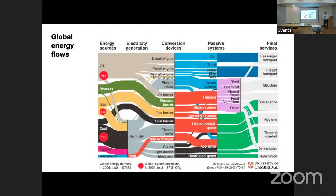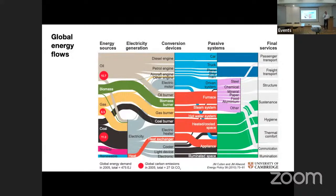I want to start tonight's talk with a diagram I drew in my PhD study about 12 years ago, which tracks global energy from the fuels on the left-hand side right through to the final services that we use energy for. Lots of my work is around creating this big picture for energy and materials to understand how energy and materials flow through society. Even though this is now quite old work, the map hasn't changed much in the years since. We use a little bit more energy, but on the left-hand side we still use a lot of fossil fuels — oil, coal, gas in yellow.